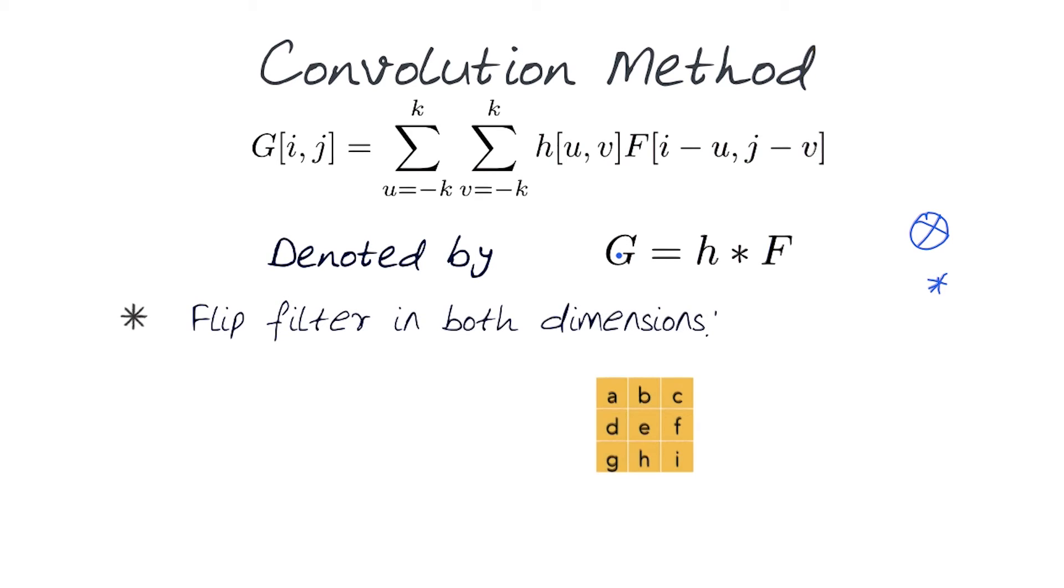One thing we notice is that basically in how we use cross correlation, the filter is flipped in both dimensions.